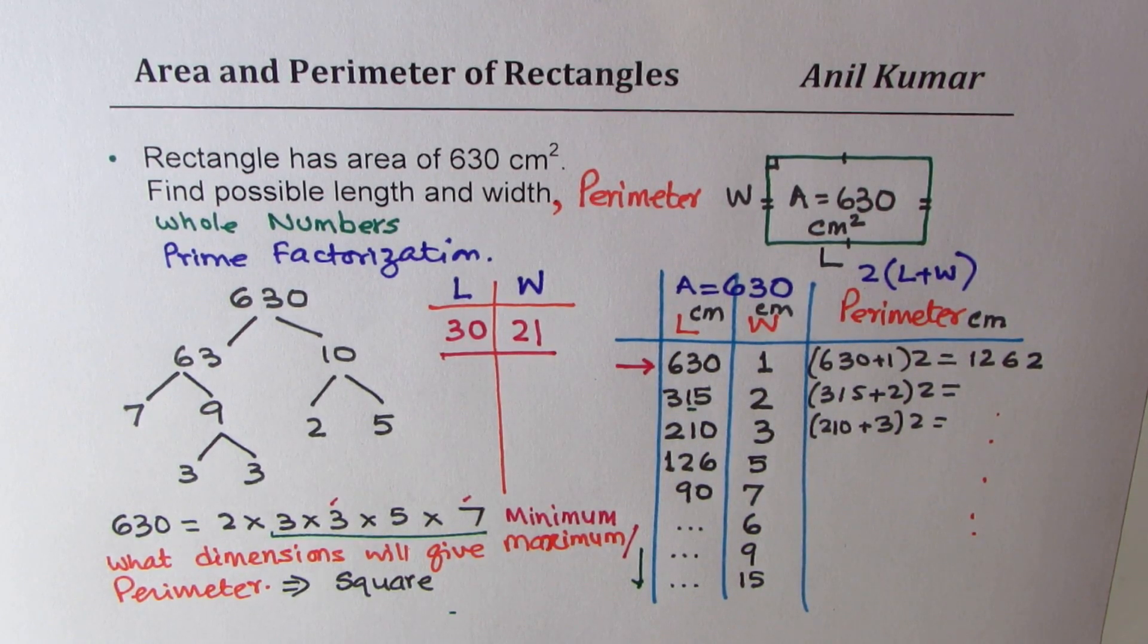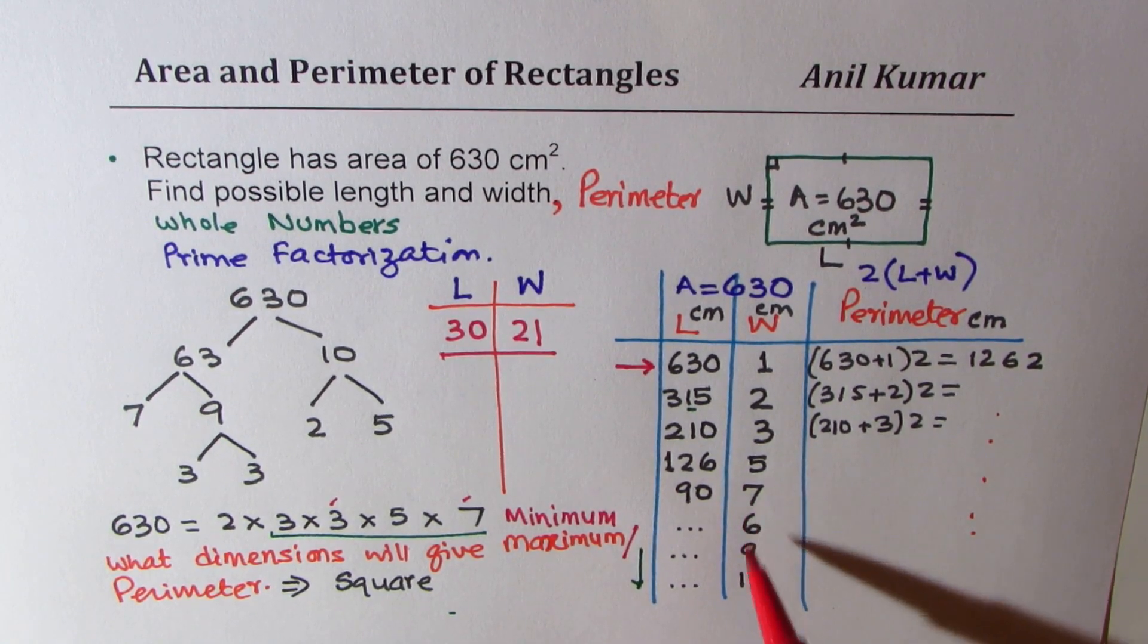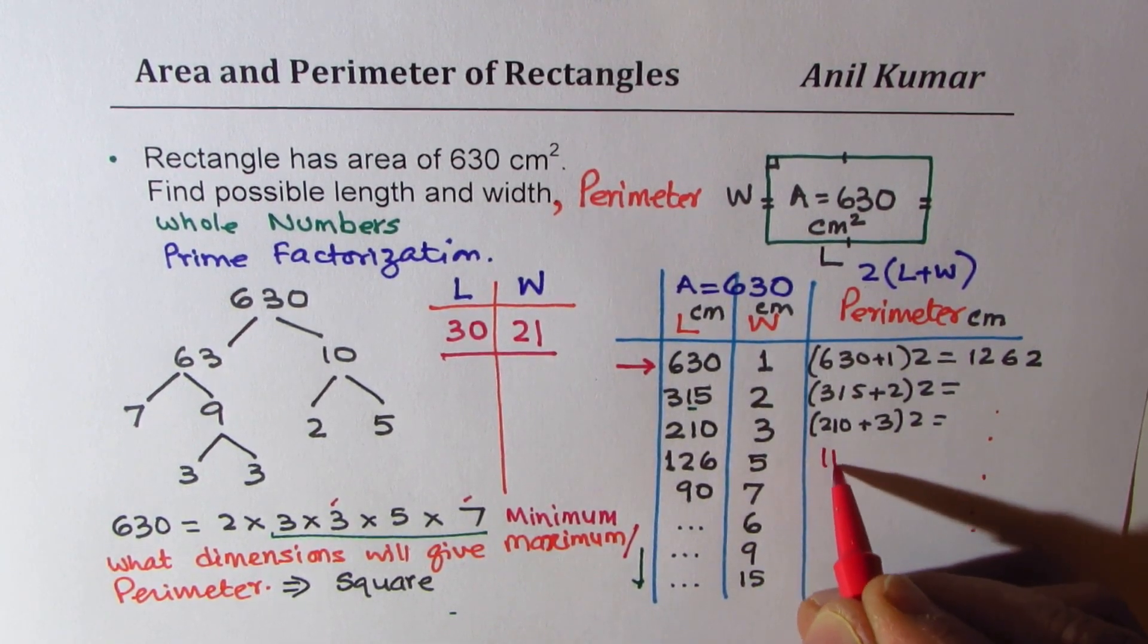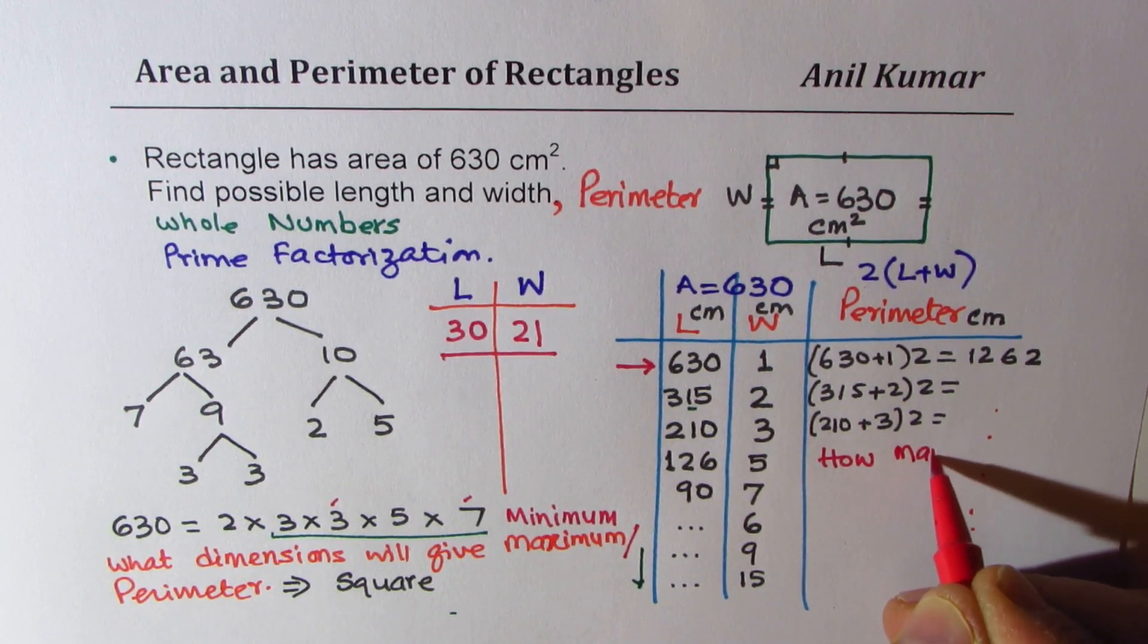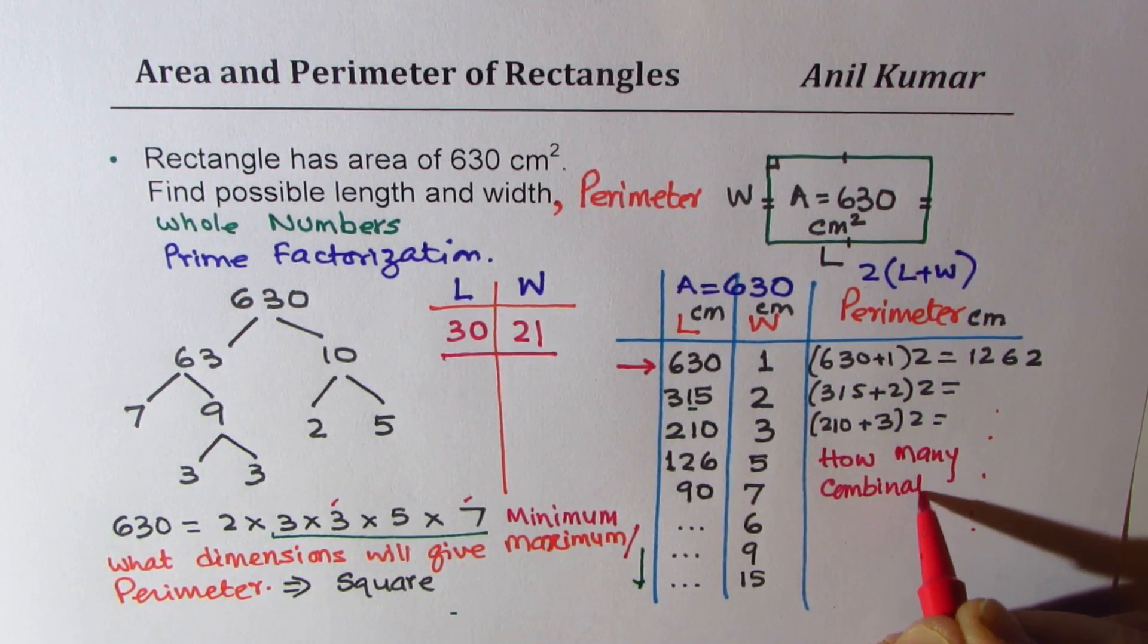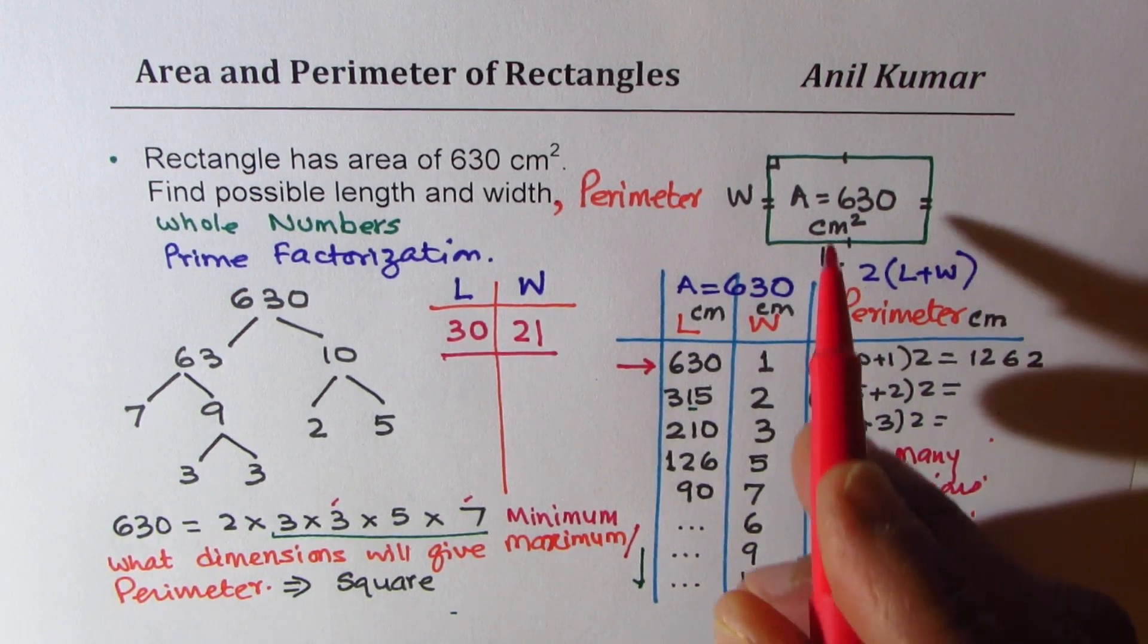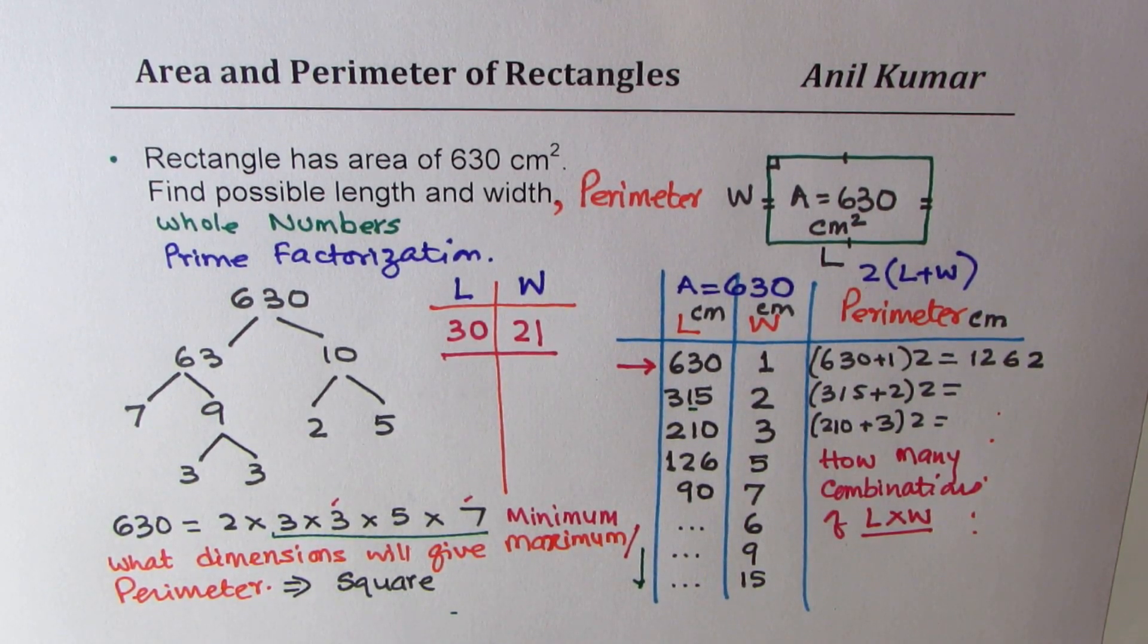So I hope you find this interesting and useful and serves the purpose. But there's a lot of work for you to do. Once you've done this work, also let me know, how many combinations did you get? So it's another question here, how many combinations do you get? Combinations of length and width to give you area of 630. So you need to figure this out also. Now, I'll post a video which will give you how to find number of maximum number of combinations for a given situation like this.